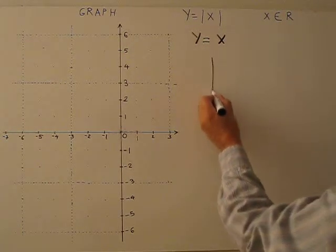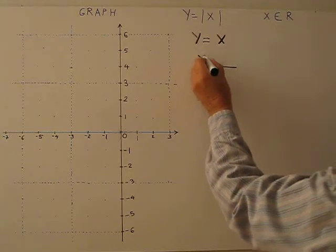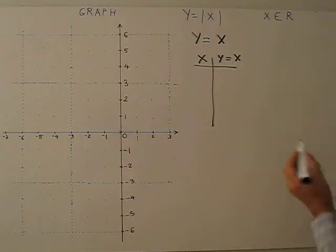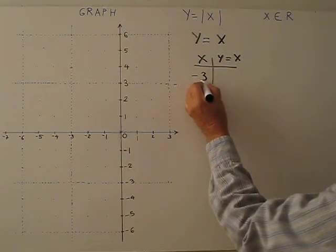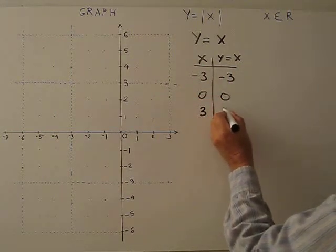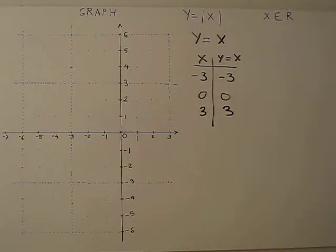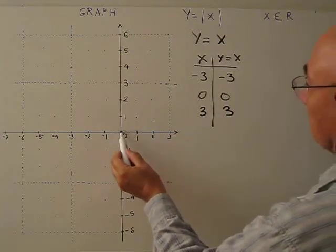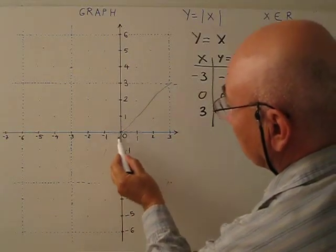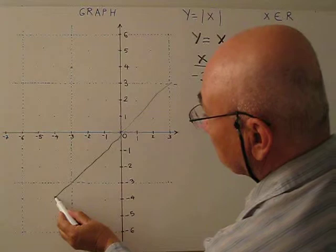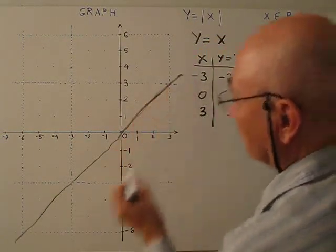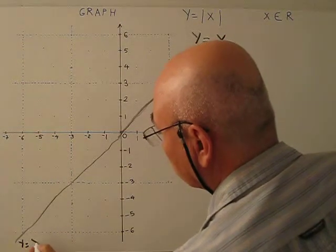Let's do a table of values. X, Y equals X. Because this is a linear function, we don't need so many points: negative 3 gives negative 3, 0 gives 0, 3 gives 3. When I graph this, I get this line — this is Y equals X.